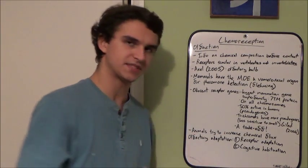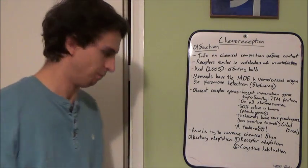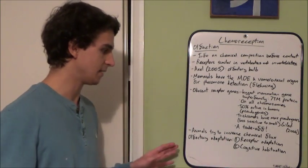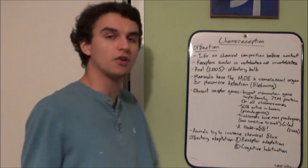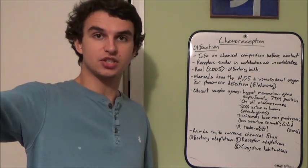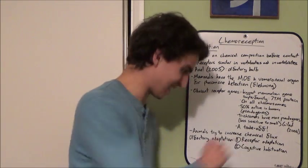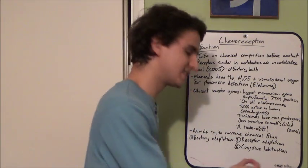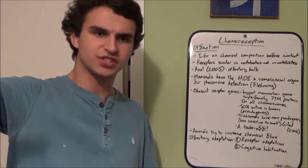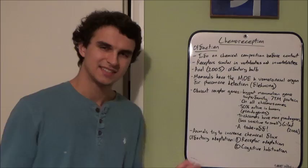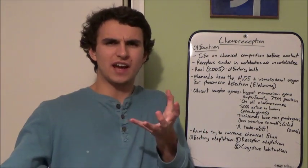Once an olfactory receptor is activated and the stimulus is prolonged, you get adaptation. There are two types: receptor adaptation — a decrease in response with continued exposure, like walking into a bakery and after five minutes no longer smelling the bread — and cognitive habituation, a psychological and neuronal process where after continued exposure to an odorant you're no longer able to perceive it. For example, going on holiday for a month and then noticing how your house smells when you return.